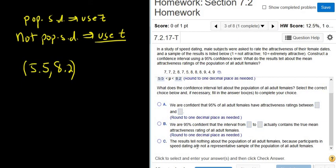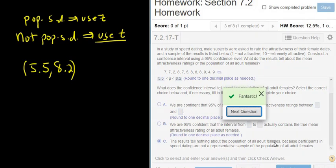So I would say the results tell us nothing about the population of all adult females. Because participants in speed dating are not a representative sample of the population of all adult females, right? So this is only people who do speed dating. So it's not representative of the entire population. So go ahead and click check answer. And that's it. I hope that made sense.